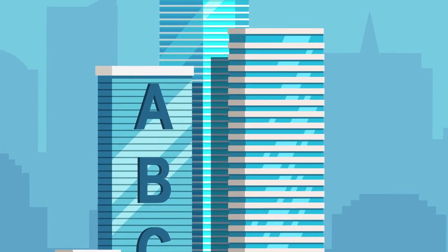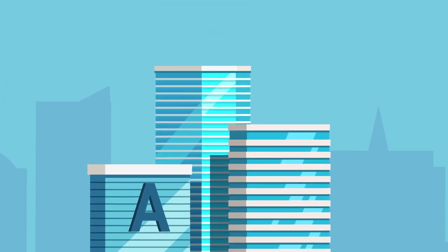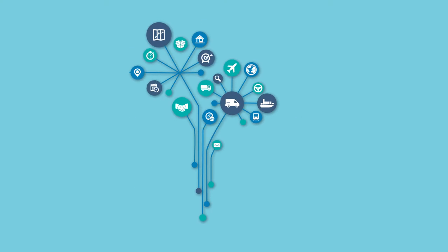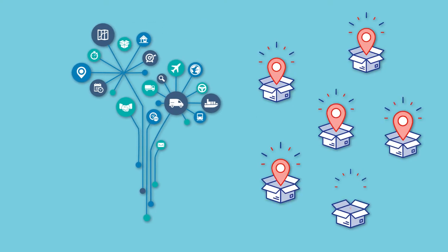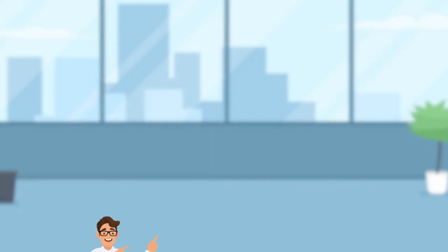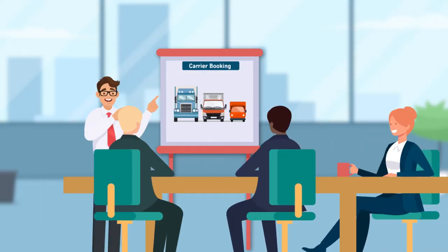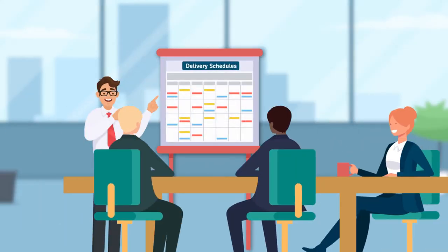ABC Transport is a third-party logistics company which provides logistics and transportation support to customers. Each day, they receive numerous shipment orders. They plan loads, book carriers, and schedule deliveries according to the details provided by customers.